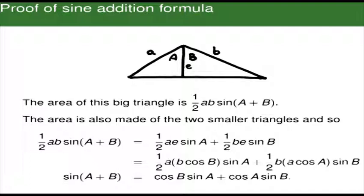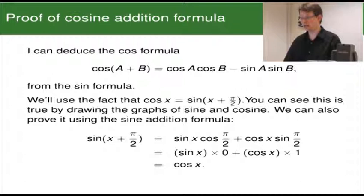After cancelling, we end up with sine(A+B) equals cosine B sine A plus cosine A sine B, which is exactly the formula we wanted. Now I can actually deduce the cosine formula — cosine(A+B) equals cosA cosB minus sinA sinB — from the sine formula.